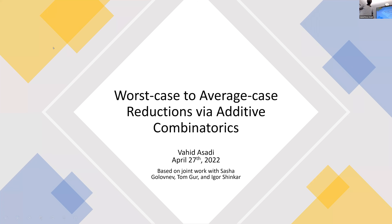Alright, everyone. We're happy to have our first in-person seminar. He is presenting some recent work with collaborators at another Canadian university on worst-case to average-case reduction. Thank you, Rafael, and thank you everyone for coming. It's very nice to see people in person. I'm going to talk about my recent work on worst-case to average-case reduction by additive combinatorics. It's a joint work with Sasha Globnav, Tom Gould, and Igor Shinkar.